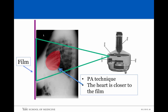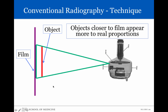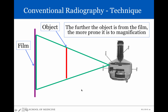Here's an X-ray generator — this is the cathode, this is the anode — electrons boil off the cathode, go to the anode, and produce X-rays. With the PA technique, the X-rays hit the back of the patient first, and the heart in this case is closer to the film. With the AP technique, the X-rays hit the frontal aspect of the patient first, and the heart is further away from the film. The closer an object is to the film, the less prone it will be to magnification and blurry edges. If you take that object away from the film, it will actually magnify and have more blurry edges.